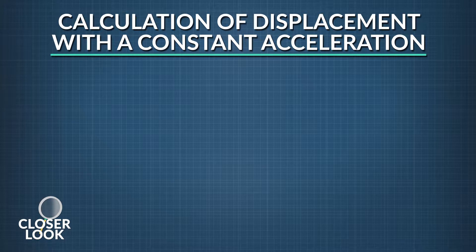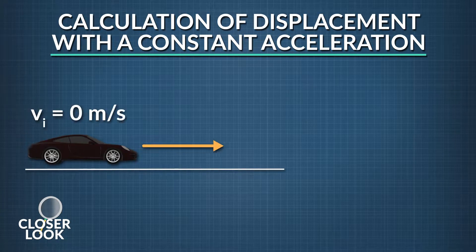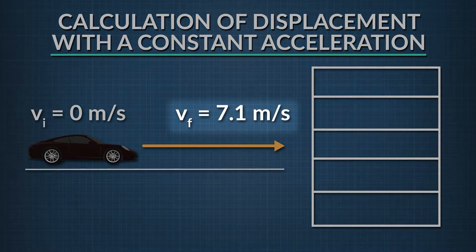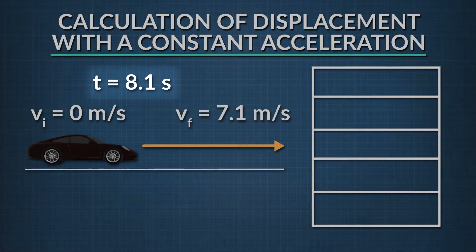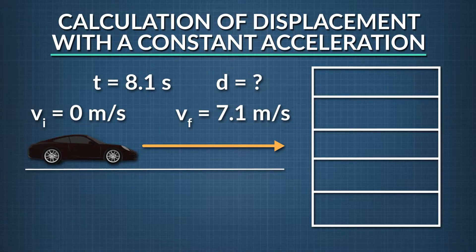Our first problem involves the calculation of displacement while there is a constant acceleration. The problem states that a car accelerates uniformly from rest to a velocity of 7.1 meters per second in 8.1 seconds. Find the displacement of the car during this time. When solving kinematic equations, the first thing we always want to do is write down the variables that we're given, as well as what we're solving for.